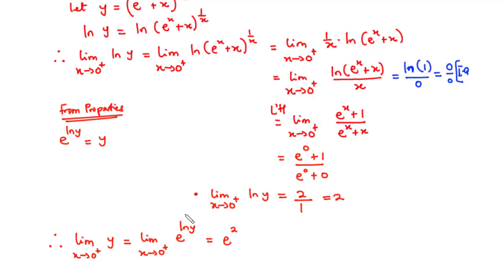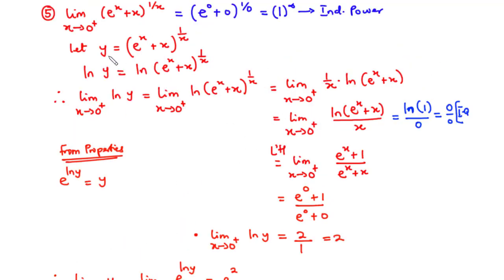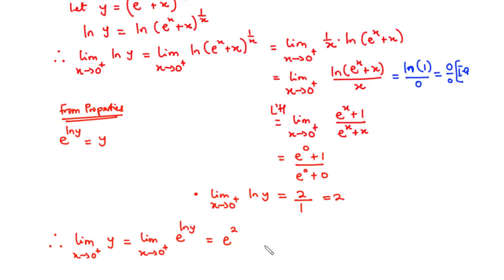Remember that initially we made y equal to (eˣ + x) to the power 1 over x. Therefore the limit as x approaches 0 from the right of (eˣ + x)^(1/x) equals e². Now let's move on to the next example.